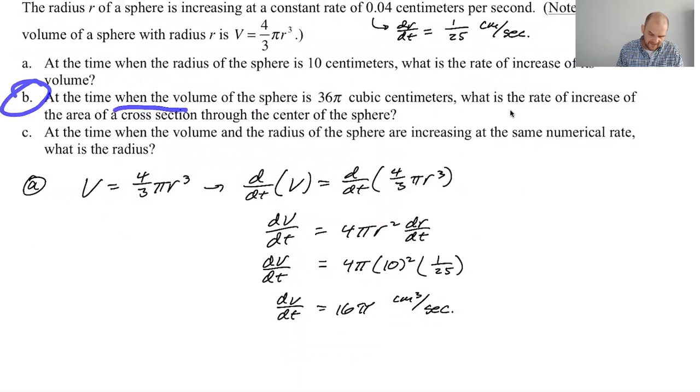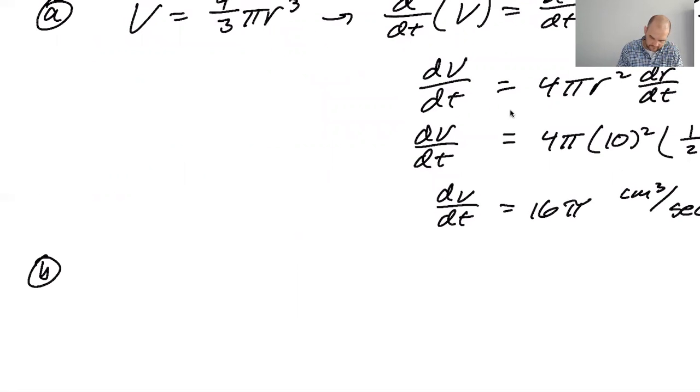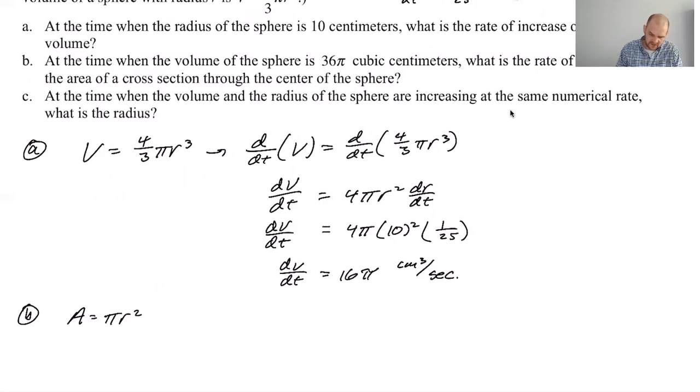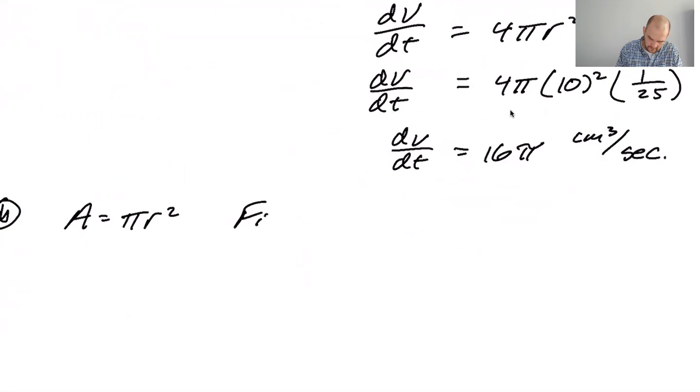At the time when the volume of the sphere is 36π cubic centimeters, what is the rate of increase of the area of a cross section through the center? So that's just a circle, right? You have a sphere, and you go cut it straight through the middle circle. So we're going to find dA/dt. Well, let's, okay. Let's think about this. We got area is π r squared. We were told the volume, this is an annoying algebra one question. So we know the volume is 36π. So we're trying to find dA/dt when V is 36π.